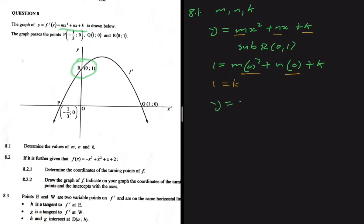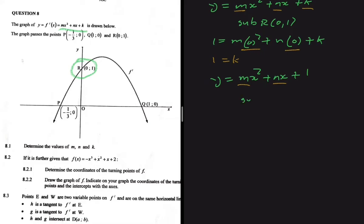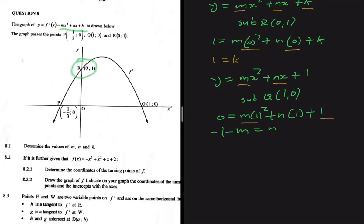Now we know k, so our function becomes y equals mx squared plus nx plus 1. We still need m and n, and we have two remaining points. Let's substitute point Q with coordinates (1, 0). That gives us: 0 equals m times 1 squared plus n times 1 plus 1, which rearranges to: minus 1 minus m equals n. We'll call this equation 1.